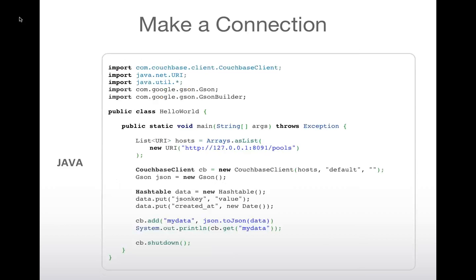Java, as usual, is a little bit more verbose. I have a list of URIs and pass that to the Couchbase client. In Java, unlike Python, Ruby, and Node.js, I actually specify a JSON transcoder — in this case the Google JSON transcoder, but there are about a dozen competing JSON transcoders like JSON Smart. I'm doing the same operations as in Ruby and Python: I have a hash table, put two key-values into it, transcode it, add it with the key 'my data,' bring it back out, and print it.